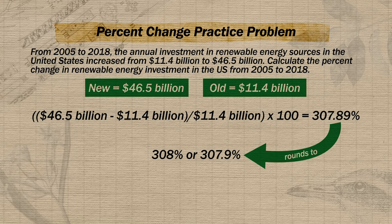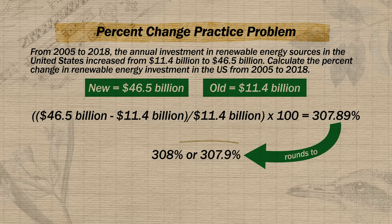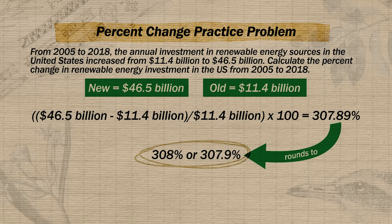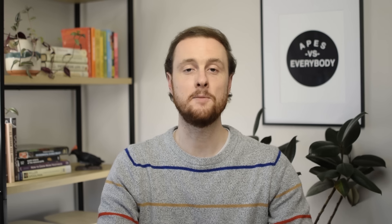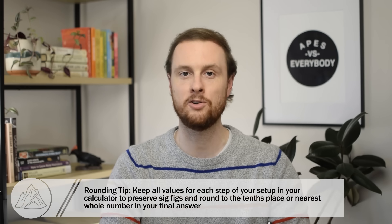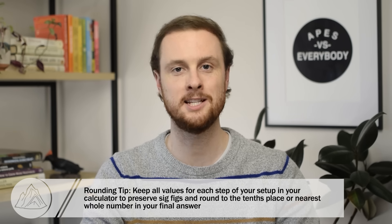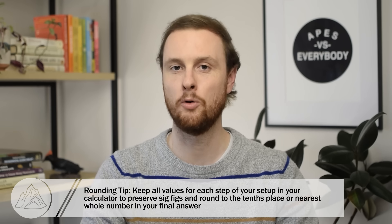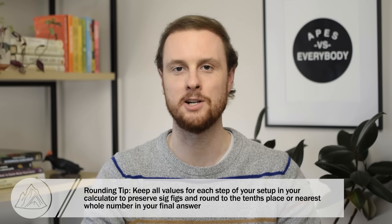So I would expect an official scoring guide to accept both 308% and 307.9%. Since it's impossible to tell exactly what rounding will be required on this year's exam, my best advice is to keep all values stored in your calculator and then round to either the tenth place or the whole percent place at the end.